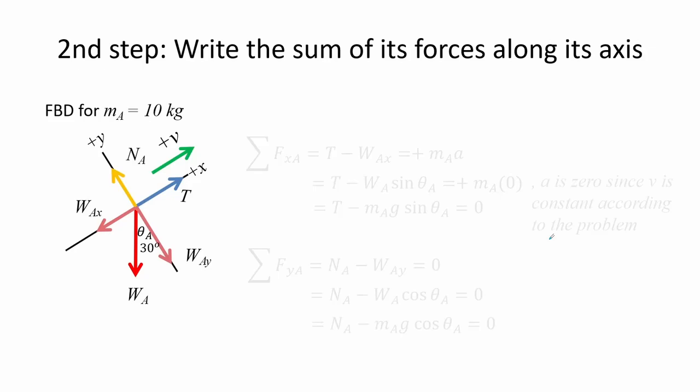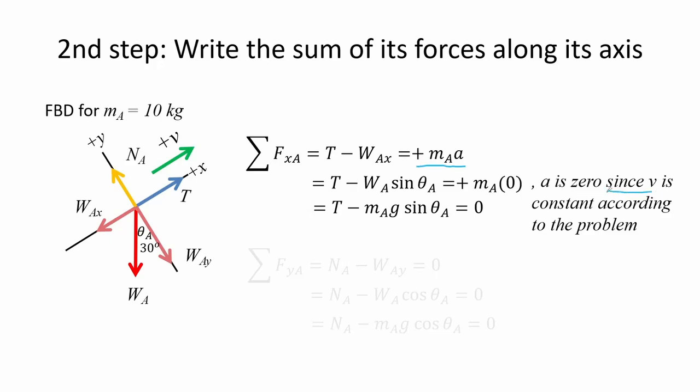The next step is to write the sum of its forces along its axis. For mass A, the forces along X are the positive tension minus weight component along X equals to mass A times acceleration. Note that the speed V is constant according to the problem, then the acceleration, which is the rate of change of velocity over time, must be equal to 0. So the sum of forces along the X axis is simply tension minus mass A times G sine of angle theta A equal to 0.